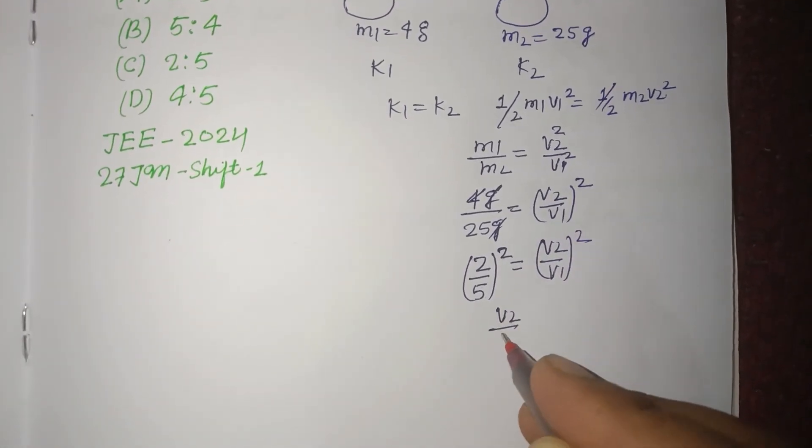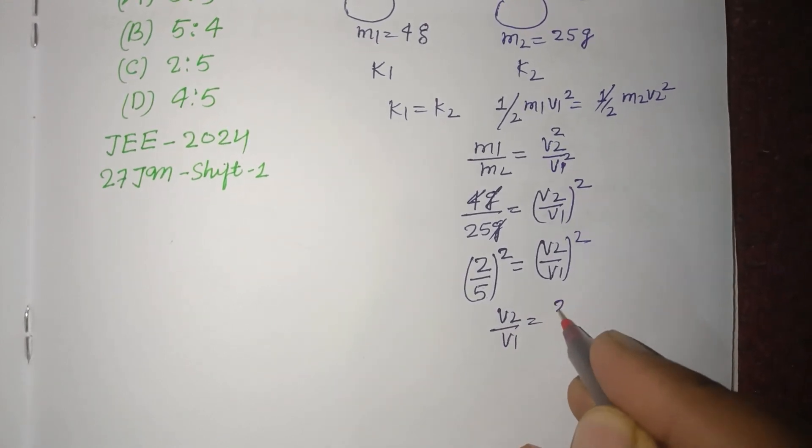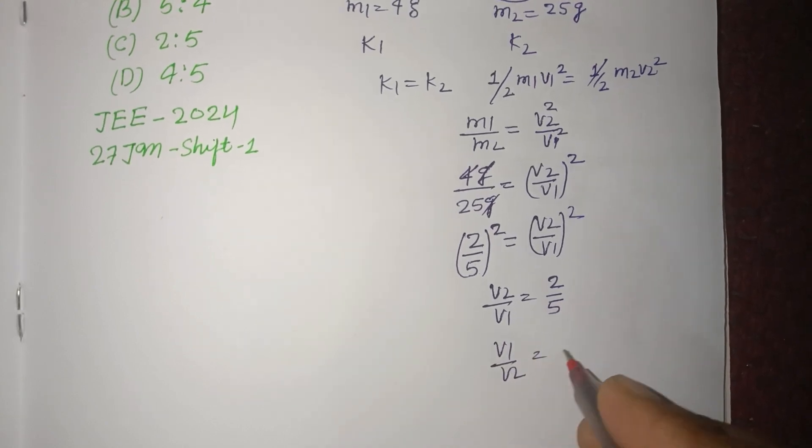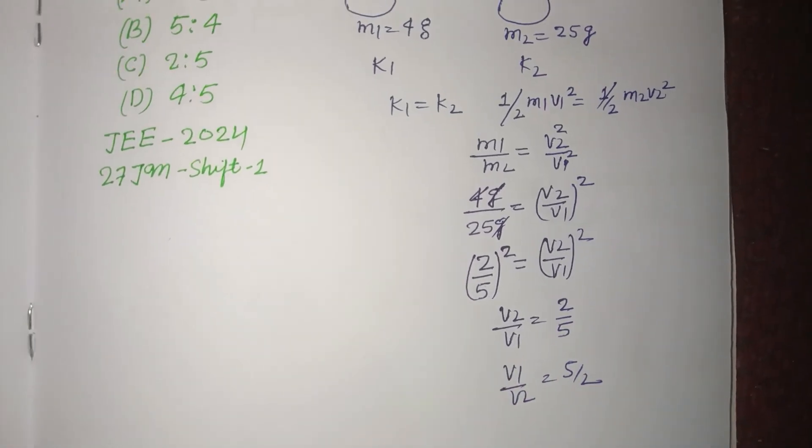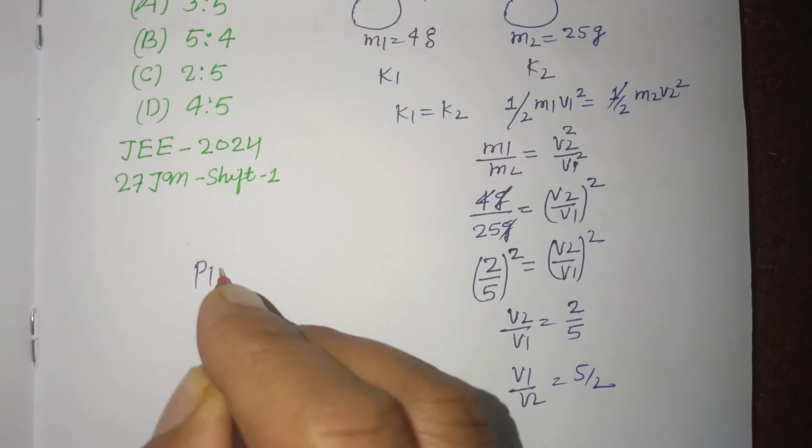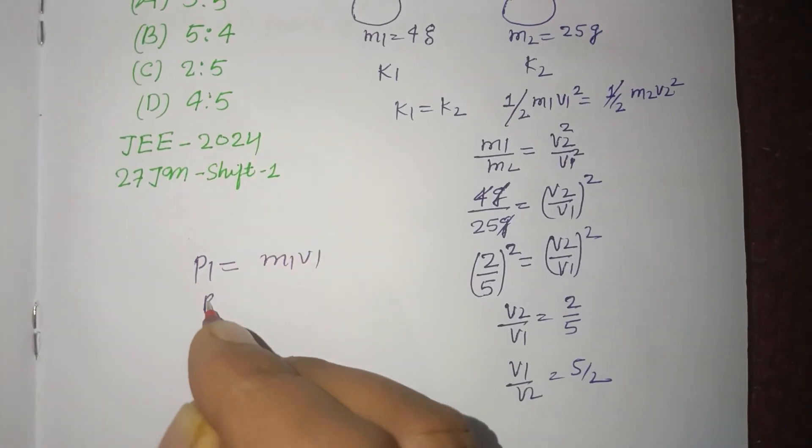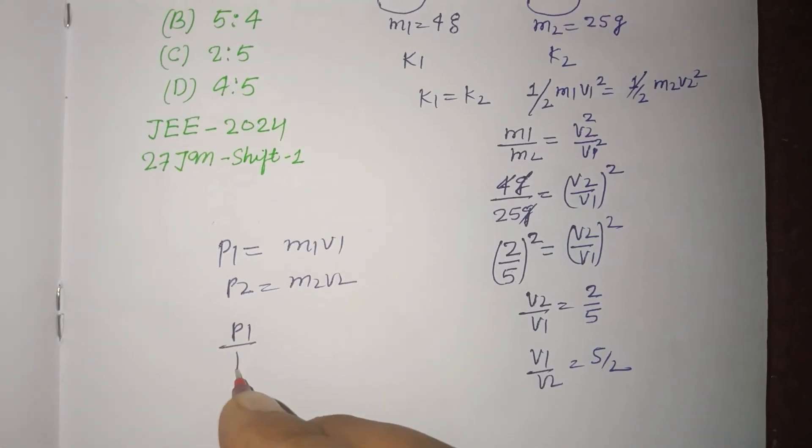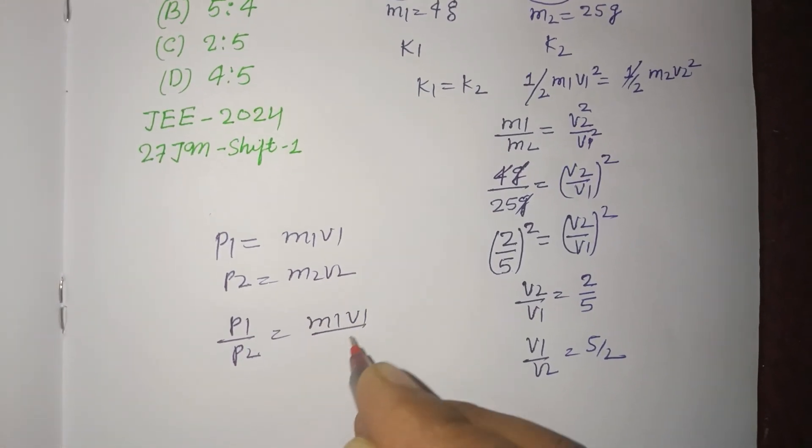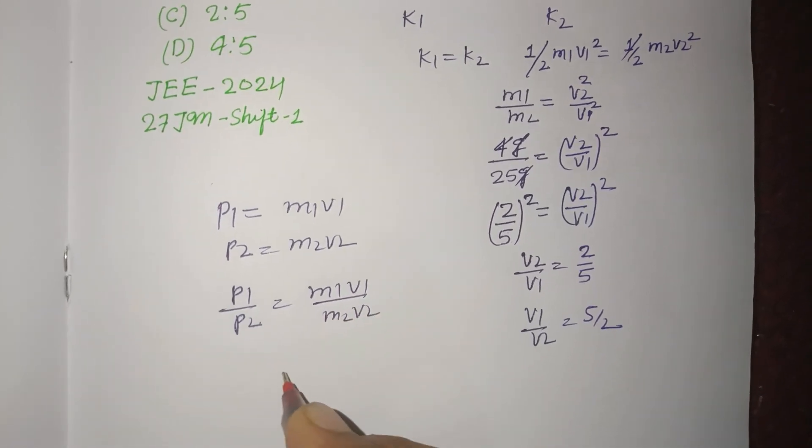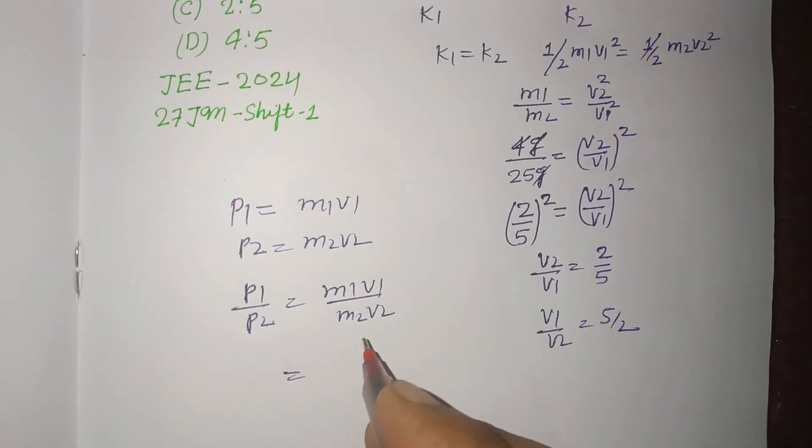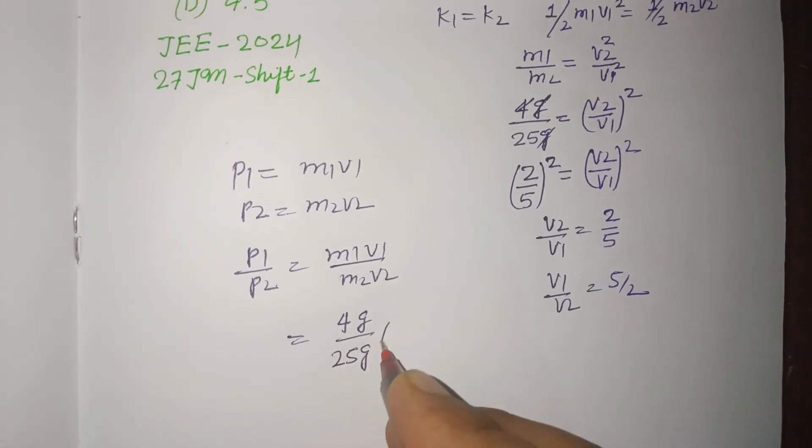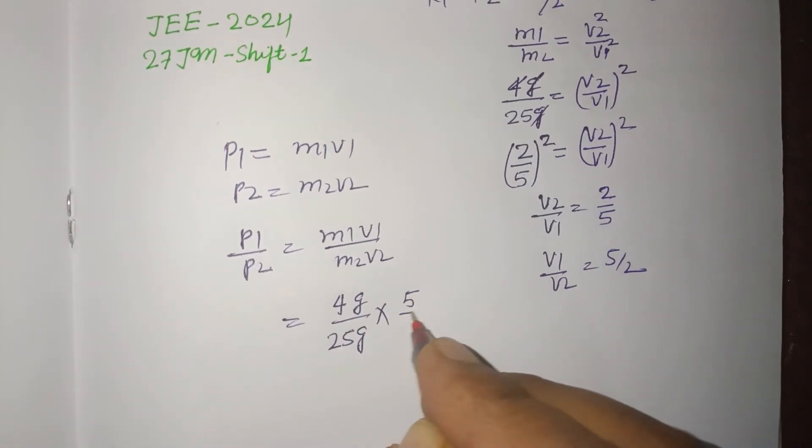Or v1 upon v2 equal to 5 over 2. Now momentum p1 equal to m1 v1 and p2 equal to m2 v2. So p1 over p2 equal to m1 v1 upon m2 v2. And m1 upon m2 is 4 gram upon 25 gram, and v1 over v2 is 5 by 2.